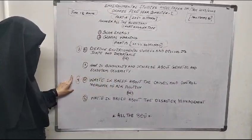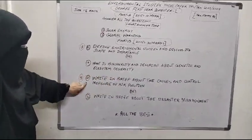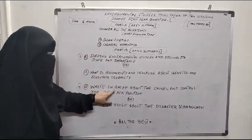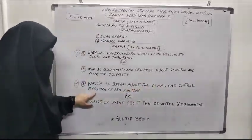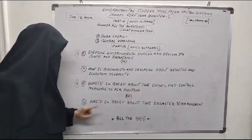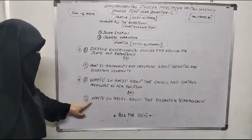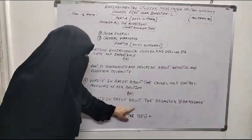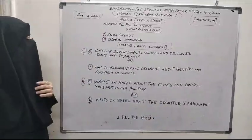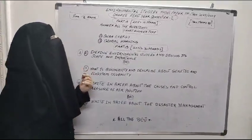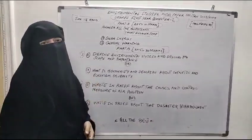Now come to question number 4. Fourth A: Write in brief about the causes and control measures of air pollution. Fourth B: Write in brief about disaster management. So students, this is a model paper for environmental studies.